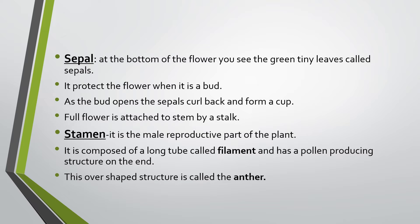Now, sepal. The sepal is at the bottom of the flower - the green tiny leaf-like structures. What is the role of the sepals? As seen in the image of a bud, those green leaf-like structures have covered the flower. So when the flower is in the bud state, the sepals protect it. As the flower opens, the sepals curl back, moving backwards to form a cup-like structure. The whole flower is attached to the stem by a stalk.